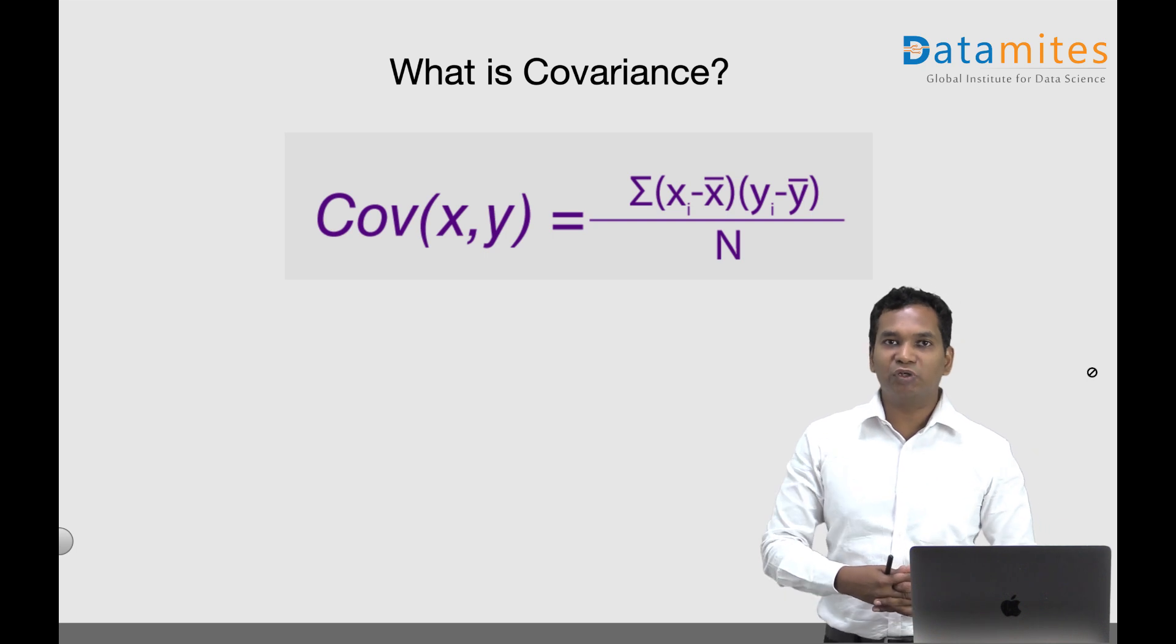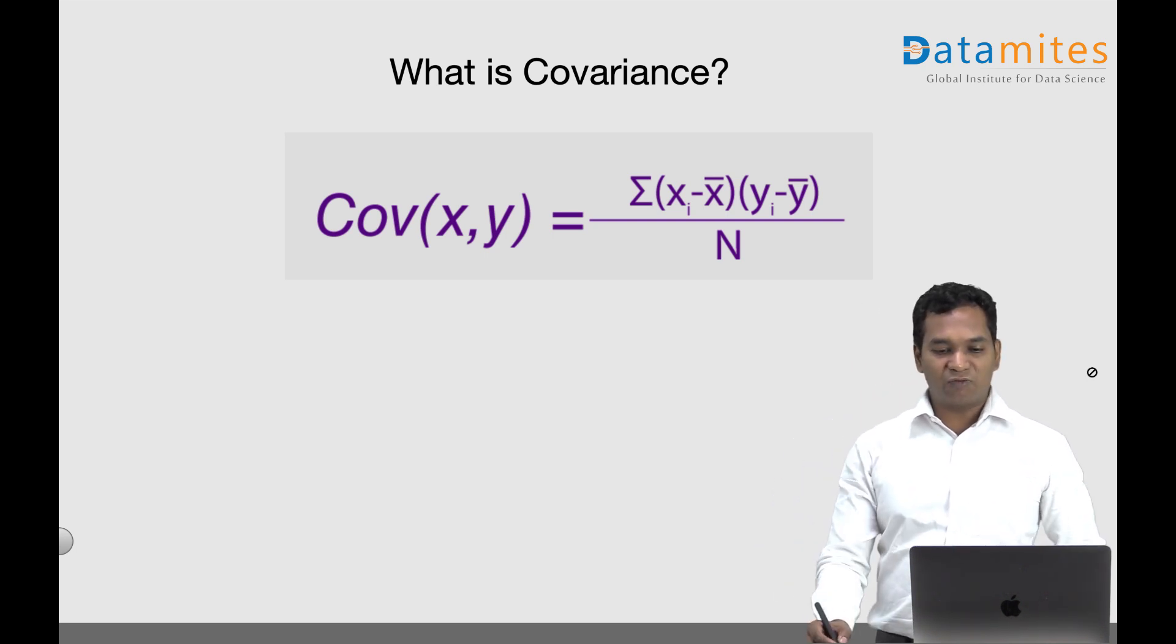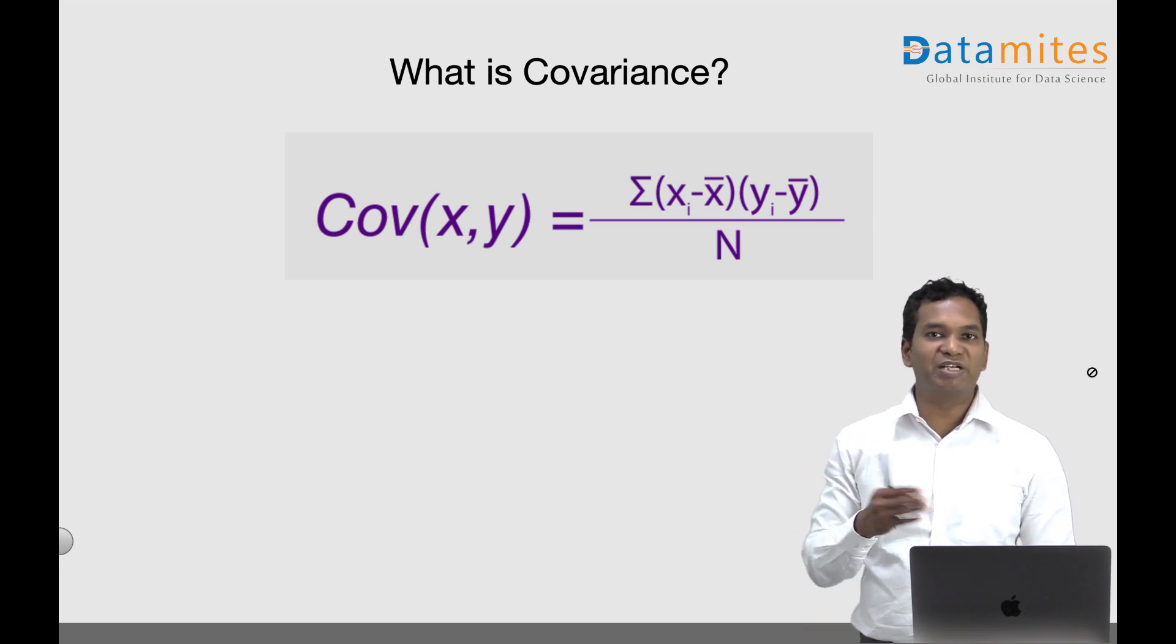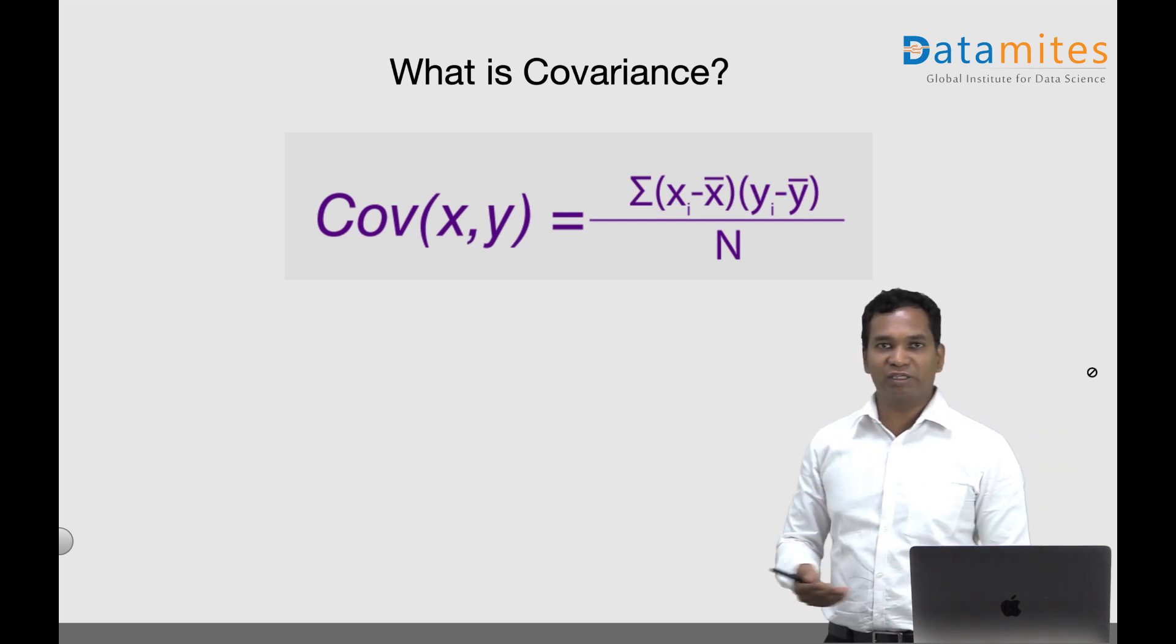The value of the covariance is calculated by finding the summation of the products of individual values from their corresponding means and taking an average of it by dividing by N.